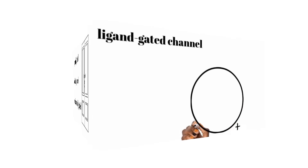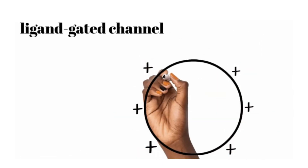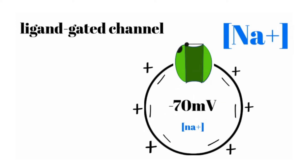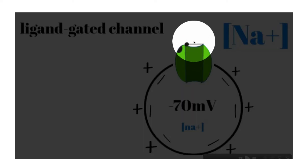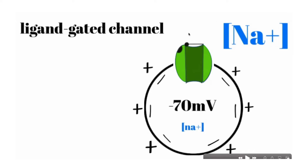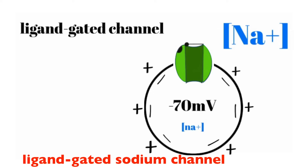Let's look at ligand-gated channels. In all of these examples we'll start with the cell at rest at negative 70 millivolts. There's a high concentration of sodium outside the cell and a low concentration inside. What we see here is a gate that is impeding sodium movement into the cell. Using this example with sodium, we can identify this more specifically as a ligand-gated sodium channel — once that gate is open, sodium can move down its electrochemical gradient into the cell.